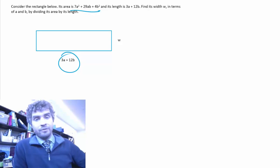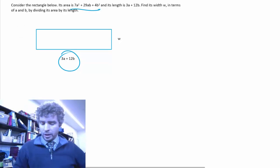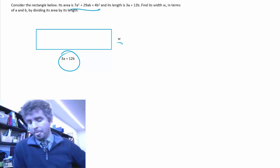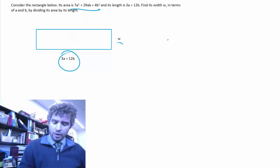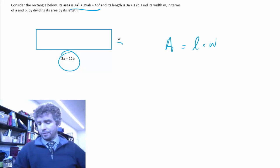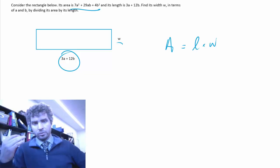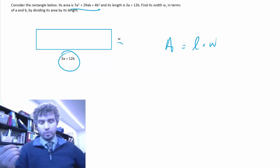So area and length. Find the width in terms of a and b by dividing its area by its length. So the area of a rectangle is, of course, length times width. Now, we're not trying to find the area. We're given the area, and we need to find the width.